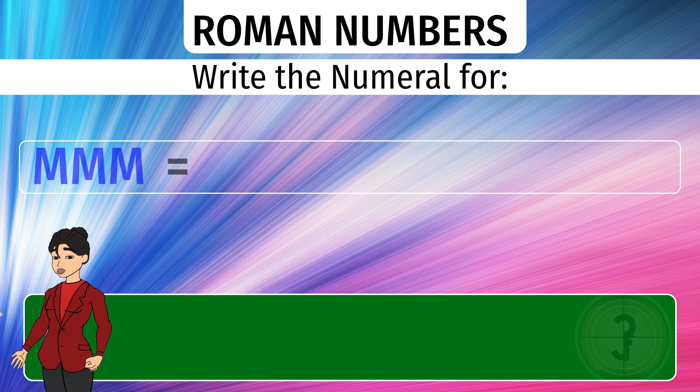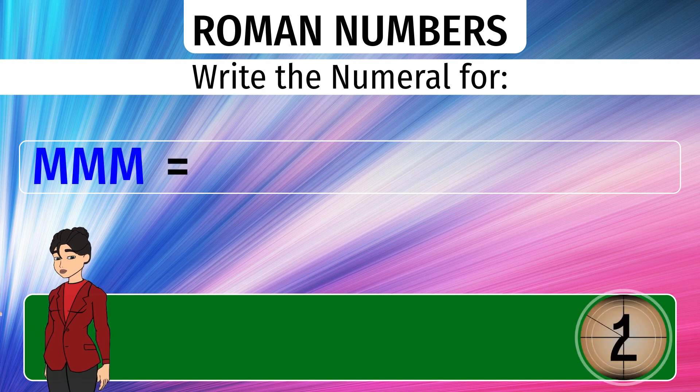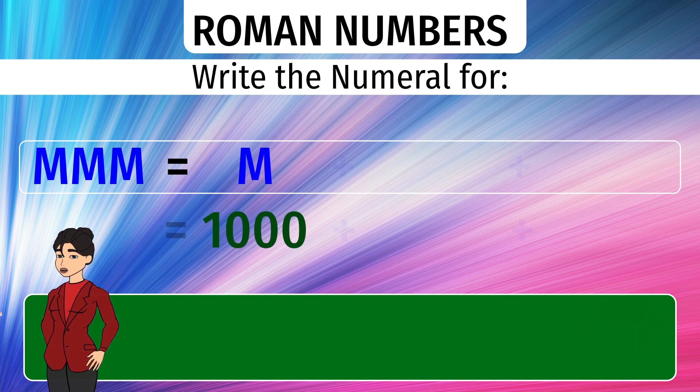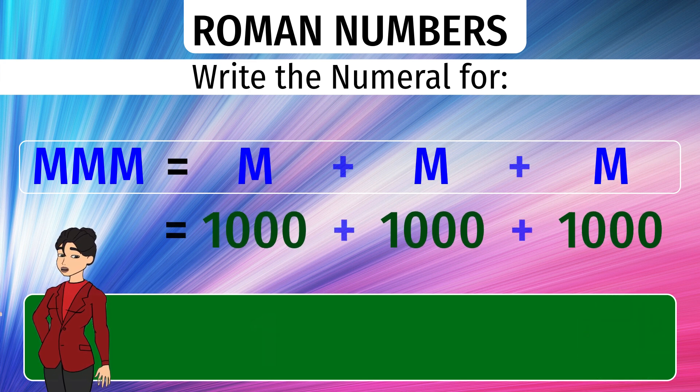What number does MMM stand for? M repeated 3 times means they will get added. The answer we get is 3000.